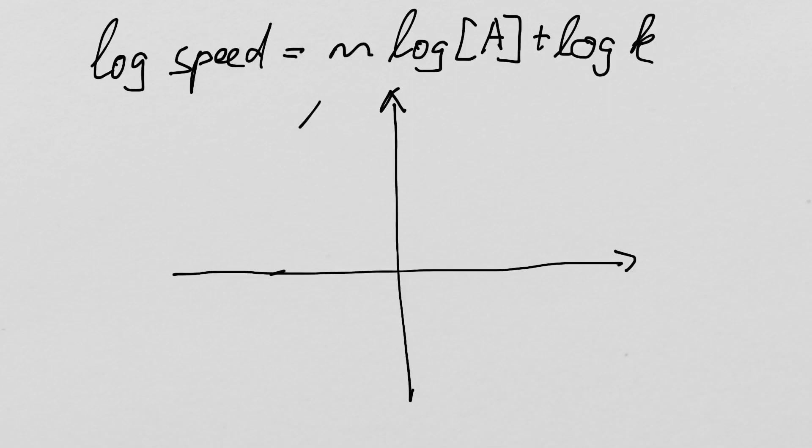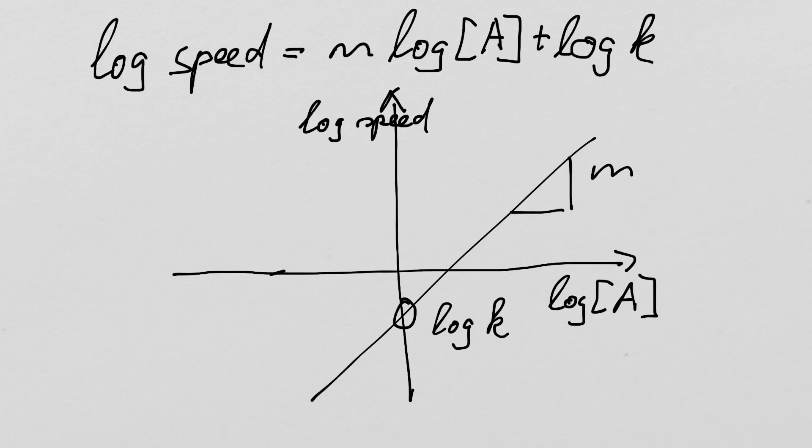So on the Y-axis we would plot log speed. On the X-axis we plot log of the concentration of A and hopefully we would get a straight line. This point here indicates log k, and the gradient of this line indicates m, and that is our rate order.